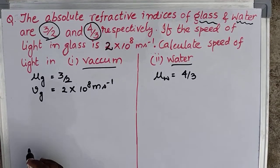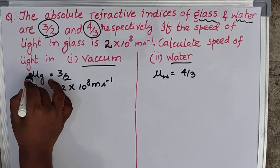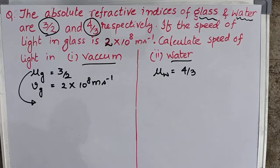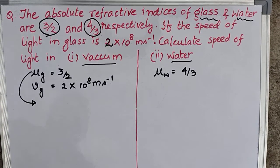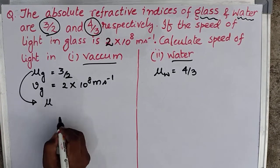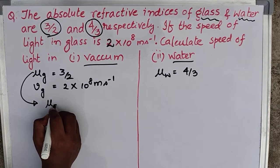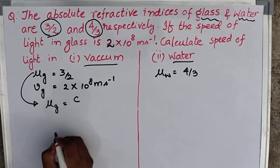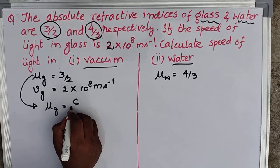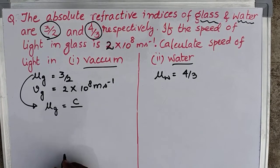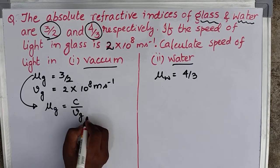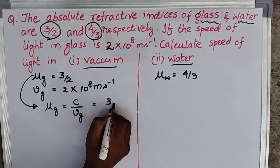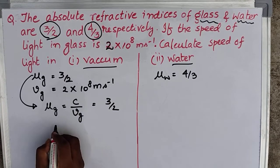To do this question, let's first see what is absolute refractive index. The absolute refractive index of any medium — here, glass — is defined as the speed of light in vacuum divided by the speed of light in that medium, here glass. And this value is equal to 3/2.